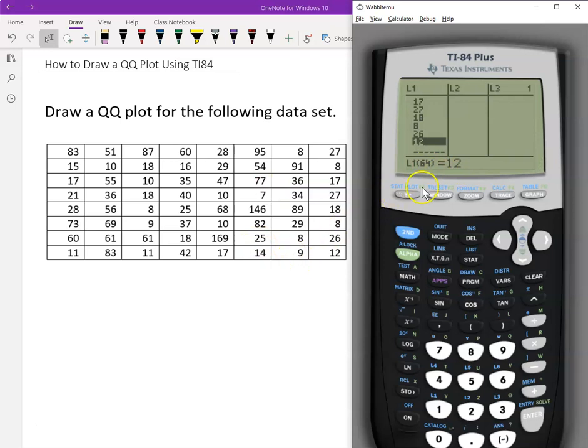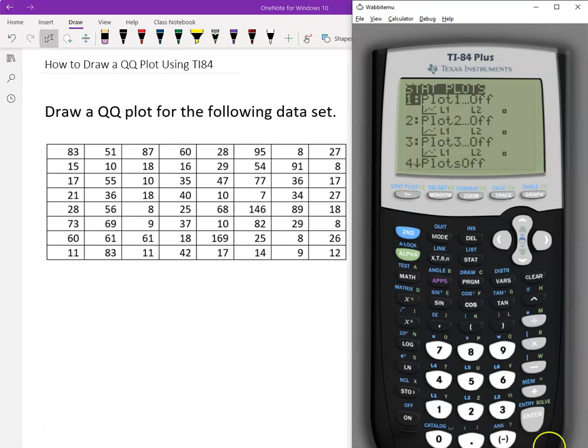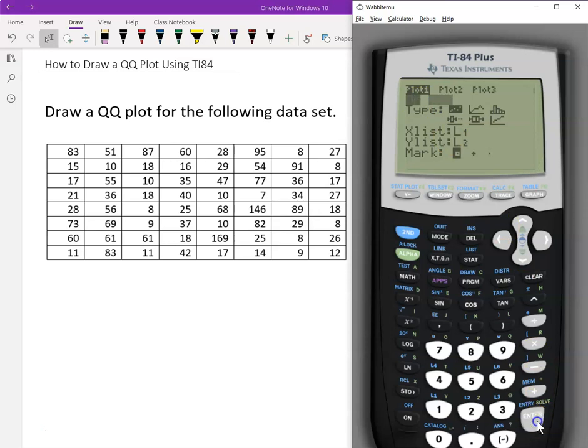And then use STAT PLOT, which is secondary Y equals. Click secondary Y equals to turn on a plot. Now it's off, we choose on. And then the type, QQ plot, we have to choose the last, the sixth plot. Go down, go right to highlight it.